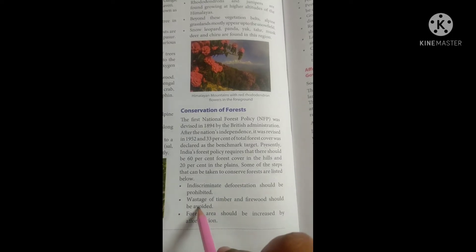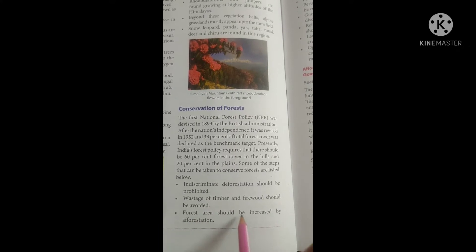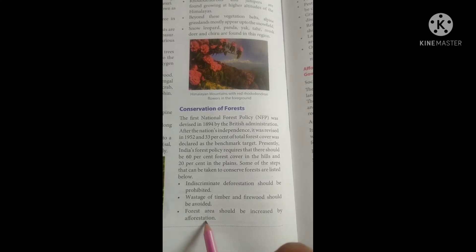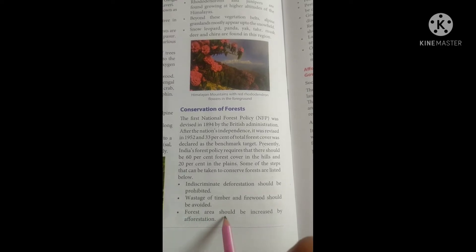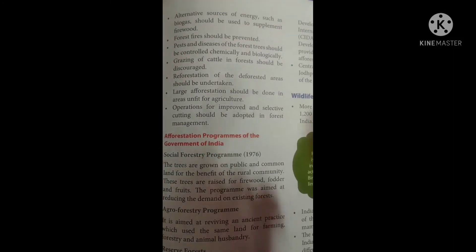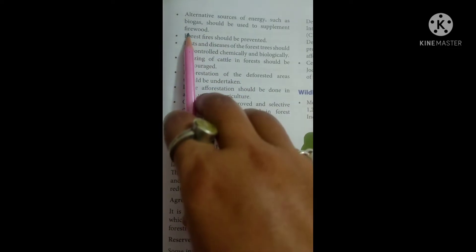The forest area should be increased by afforestation. Afforestation means to plant trees and increase the forest area. Alternative sources of energy such as biogas should be used to supplement firewood.